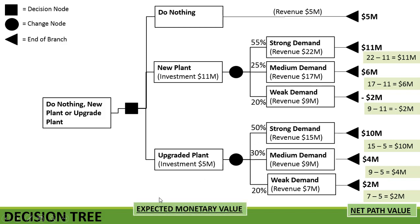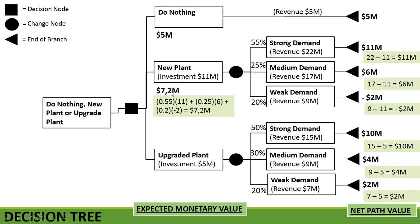Now we calculate the expected monetary value. For doing nothing it is 5 million dollars. For the new plant: 0.55 times 11 million, plus 0.25 times 6 million, plus 0.20 times minus 2 million — giving an expected monetary value of 7.2 million dollars. For upgrading the plant: 0.5 times 10 million, plus 0.3 times 4 million, plus 0.2 times 2 million — giving 6.6 million dollars.